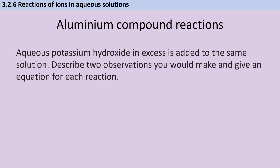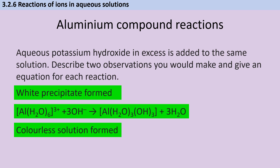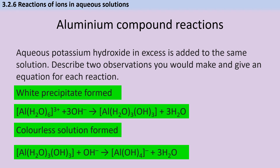Exam question: Adding aqueous potassium hydroxide dropwise in excess to the same aluminium solution — two observations and an equation for each reaction. First, a white precipitate forms as three hydroxide ions substitute three water molecules. Then, with excess hydroxide, the white precipitate dissolves to form a colourless solution, producing Al(OH)₄⁻, which as we know is colourless.